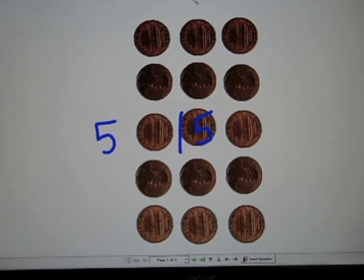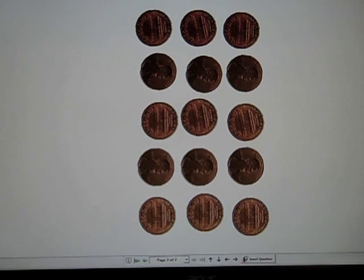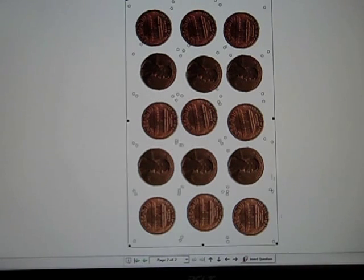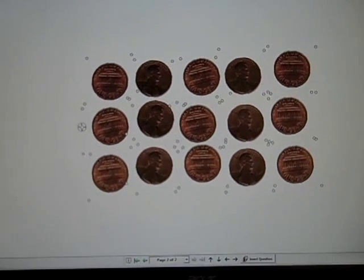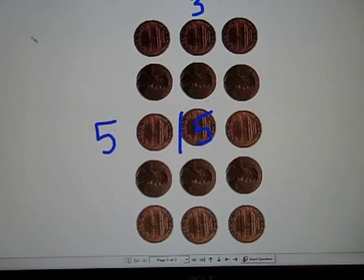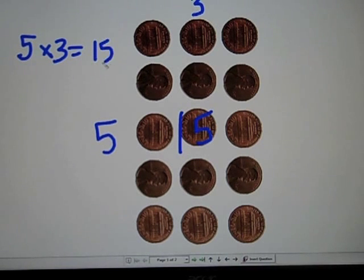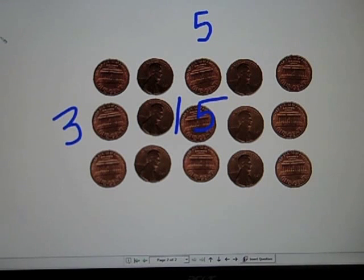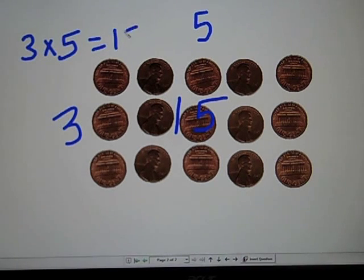There are five rows with three pennies each. Now, if I move the pennies like this, there are still 15 pennies. Even though there are three rows with five pennies in each row. So, if you know that five times three equals 15, then you automatically know that three times five equals 15, too.